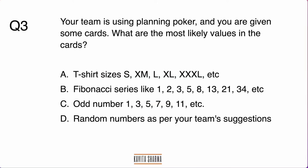Third question: your team is using planning poker and you are given some cards. What are the most likely values on the cards? If you said T-shirt sizes, that's probably wrong. The Fibonacci series is one answer that could be right. Odd numbers — no. Random numbers as per your team's suggestion could be, but the best method is using the Fibonacci series.